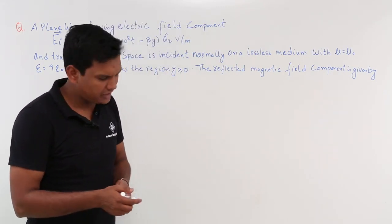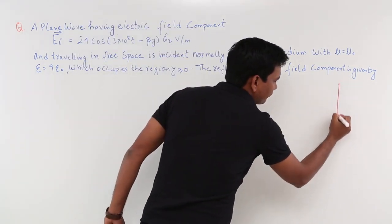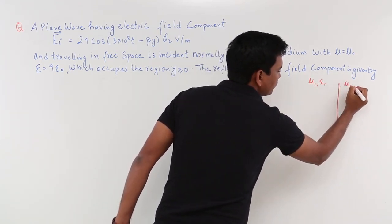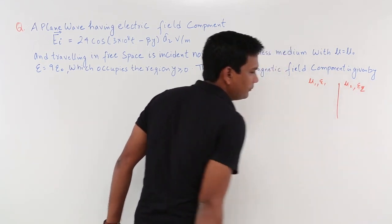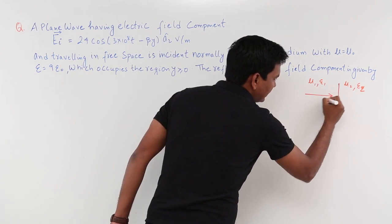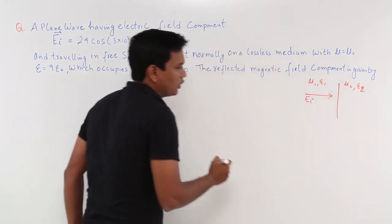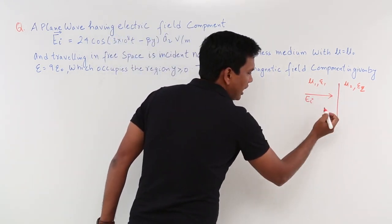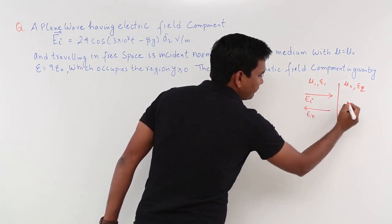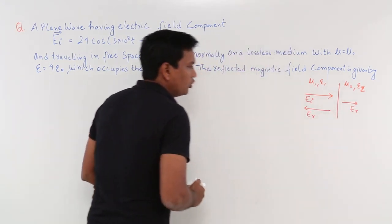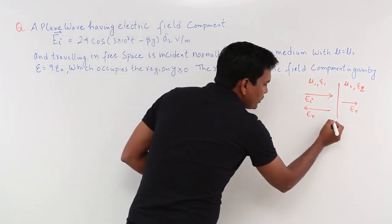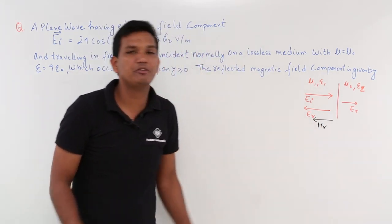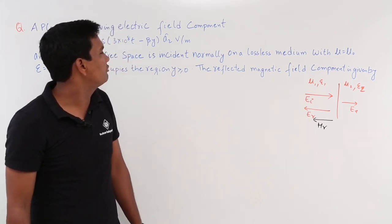Let us visualize this. If I draw this, it will look like this: medium 1 with μ₁, ε₁ and medium 2 with μ₂, ε₂. There is a wave incident like EI. When it is incident, there would be a magnetic field also, a reflected field, and a transmitted field. They want to know what would be the reflected magnetic field.